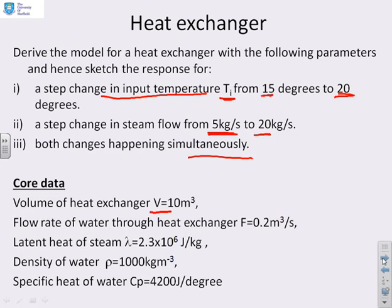Now the data we're going to give you: volume of the tank 10 meters cubed, flow of water through the heat exchanger 0.2 meters cubed per second, latent heat of steam 2.3 times 10^6 joules per kilogram, density of water 1000 kilograms per meter cubed and specific heat of water 4200 joules per degree.